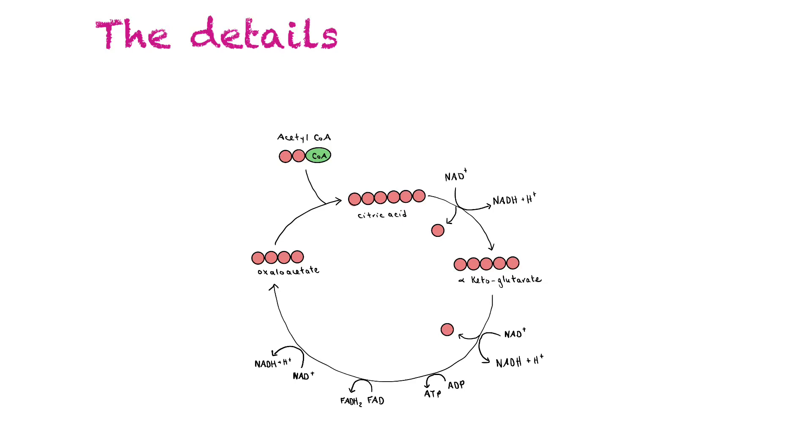And then the second step is that citric acid gets oxidized to reduce NAD+ to NADH + H+ and at the same time a carbon dioxide is removed so one of our carbon groups is lost and we end up with a molecule known as alpha-ketoglutarate and that's a five carbon molecule.